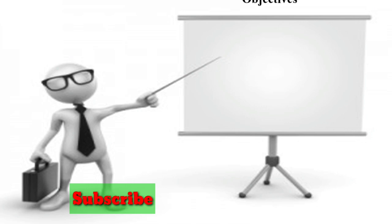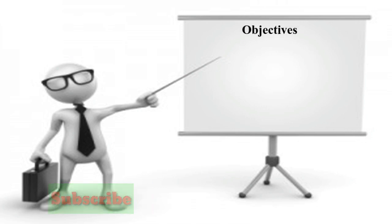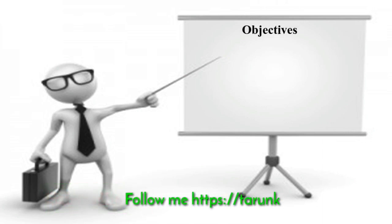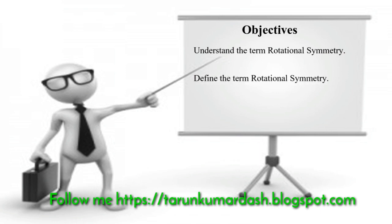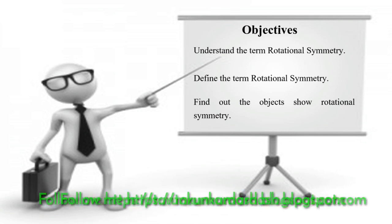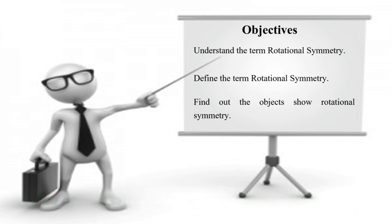Before completing the lesson, let us find out what we are going to achieve after the lesson. The objectives are: number one, understand the term rotational symmetry; number two, define the term rotational symmetry; and number three, find out the objects that show rotational symmetry.